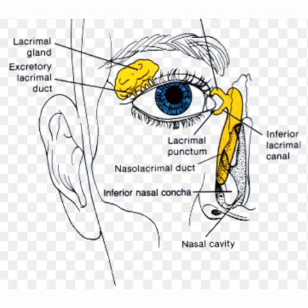The punctum is an opening at the medial part of the eyelid margin, situated about 6 mm from the medial canthus. Under normal circumstances the punctum is not visible — it is only visible when we pull the eyelids outwards. Tears first enter into the punctum and then go into the canaliculus.